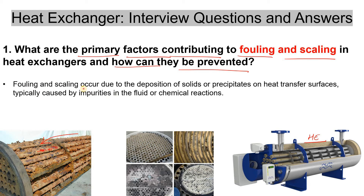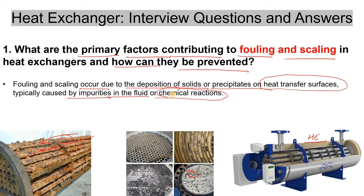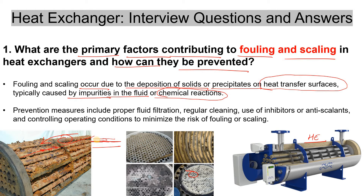Fouling and scaling occur due to the deposition of solids or precipitates on the heat transfer surface. When we say heat transfer surface, it means your tube outer surface or the internal surface of the shell. It is typically caused by impurities in the fluid — mainly in liquid — or sometimes by chemical reactions. We know that at the surface the velocity is zero and at the center the velocity is maximum, so obviously the deposition of solids will be present at the surface. Sometimes solid ions will also be present there.